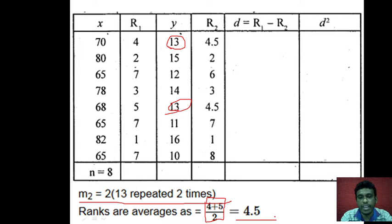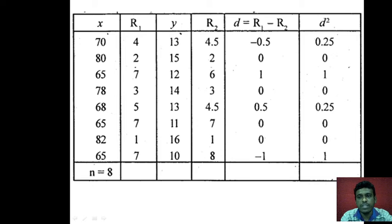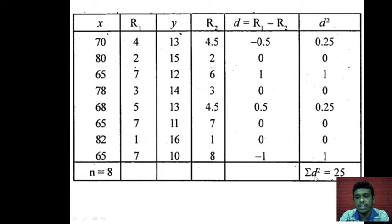Now D equals R1 minus R2 — same procedure. Find D squared also. In this case, minus 0.5 times minus 0.5: minus times minus is plus, and 0.5 times 0.5 is 0.25. Similarly, calculate all D squared values. Note down the summation of D squared — add up all D squared values — and you will get summation D squared equals 2.5.